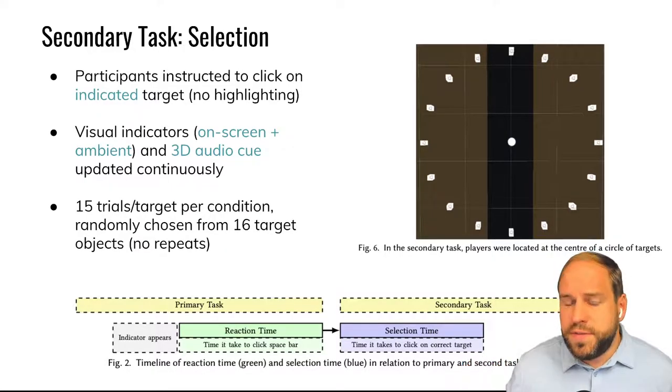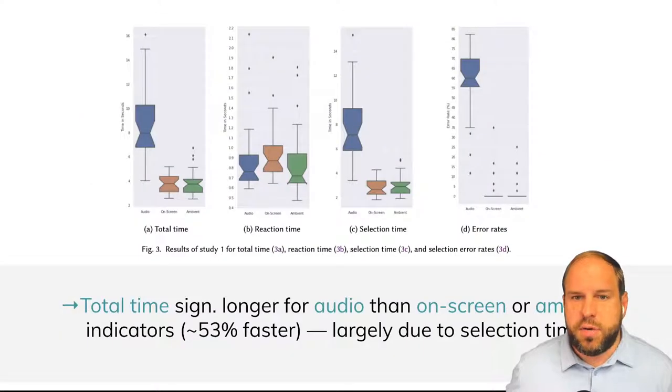And each condition consisted of 15 trials, which was a single target per condition. And the targets were randomly chosen from the pool of available targets. So the progression to the next target only occurred when the target was selected and other clicks were counted as errors.